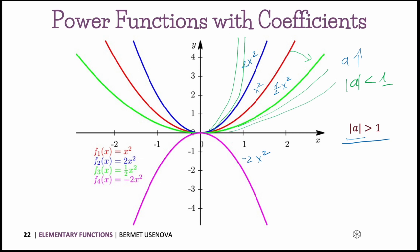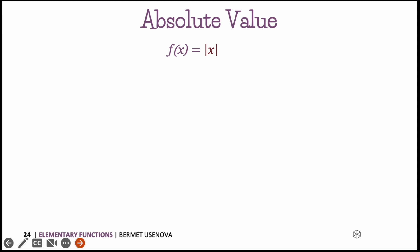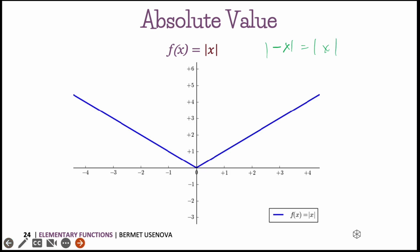Next we look at the graph of the absolute value function — we already saw it before, so we will just revise it. The absolute value function is an even function: for all real numbers x, |−x| = |x|. This behavior is visible on the graph because the graph does not change when mirrored about the y-axis.